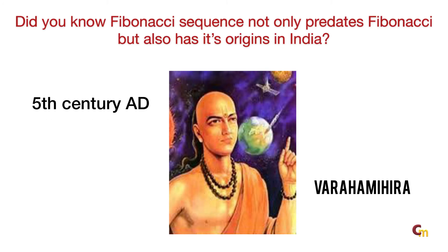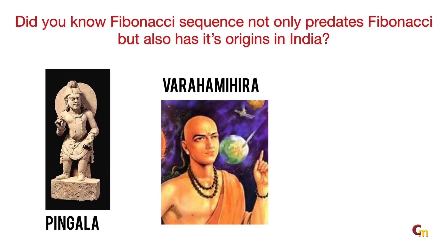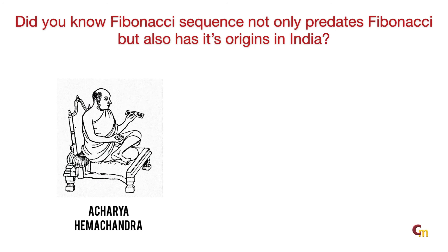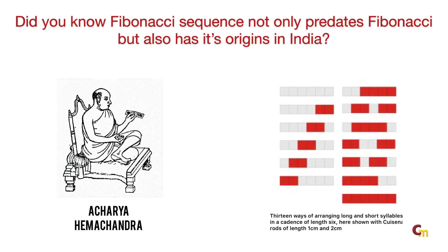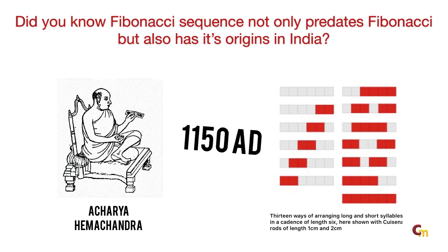Later, in the 5th century AD, the Indian astronomer-mathematician Vara Mihir used the same sequence in his work related to binomial coefficients. While Pingal and Vara Mihir had used the number series for their respective fields, one of the most comprehensive commentaries on it — applying it to various other fields — was done by a Hindu-Jain scholar named Acharya Hemchandra in the 12th century AD. Documentary evidence shows that Acharya Hemchandra compiled his treatise in 1150 AD.